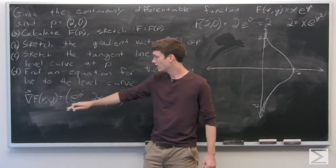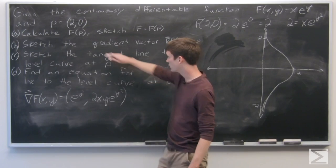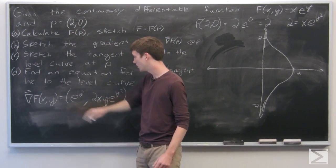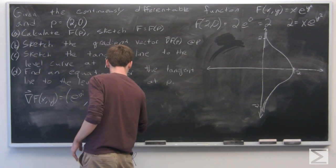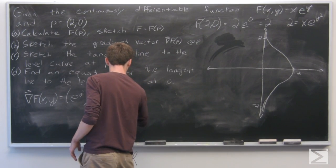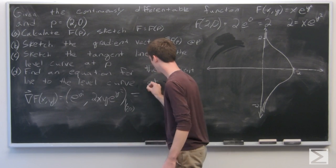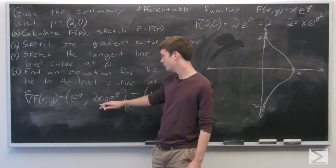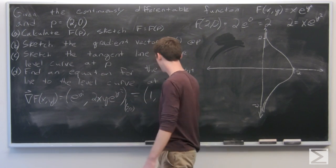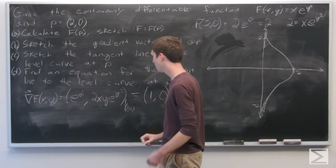And we want this evaluated at p, which is (2,0). So if we plug in (2,0), we get 1, y is 0, so this entire term is 0, so we get (1,0). So our gradient vector,